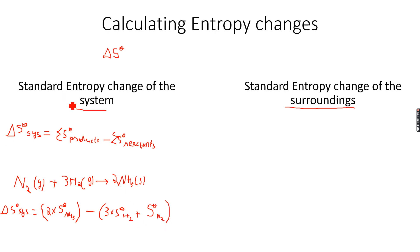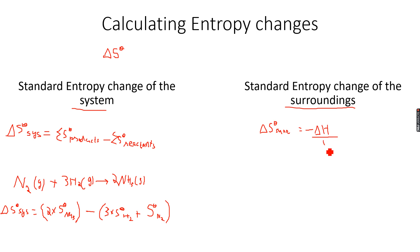This gives the entropy change of the system for this reaction. The standard entropy change of the surroundings, denoted Delta S naught surroundings, is equal to minus Delta H over T, where Delta H is the enthalpy change of the reaction and T is the thermodynamic temperature. Always remember that T must be in Kelvin, not degrees Celsius or Fahrenheit.